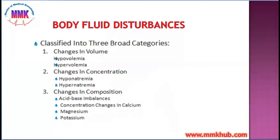The third major category is the changes in the composition. Different homeostatic mechanisms, like acid-base imbalances, and concentration changes in calcium ion, magnesium ion, and potassium ion, also affect the body fluid disturbances. These we will discuss in the next few slides.